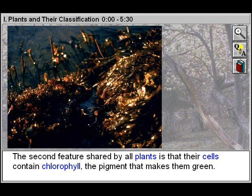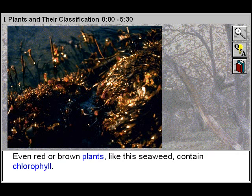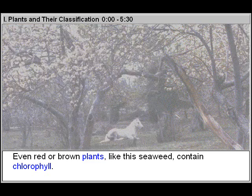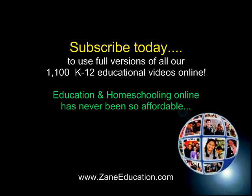The second feature shared by all plants is that their cells contain chlorophyll, the pigment that makes them green. Even red or brown plants like this seaweed contain chlorophyll.